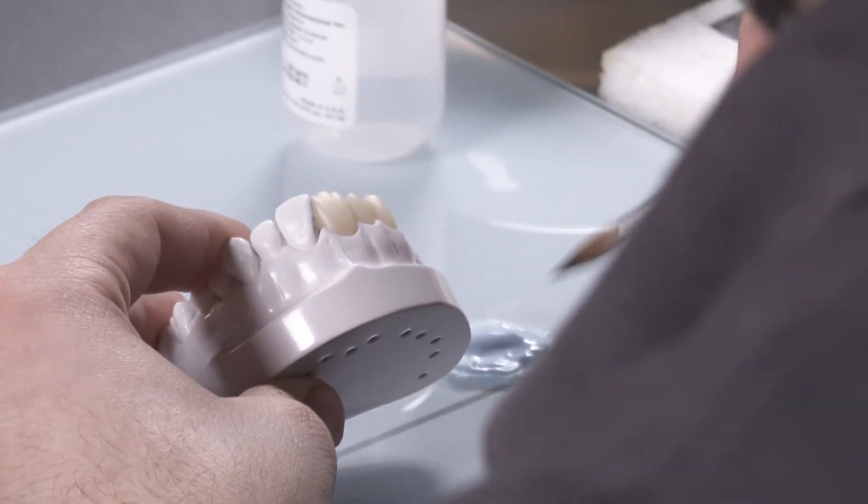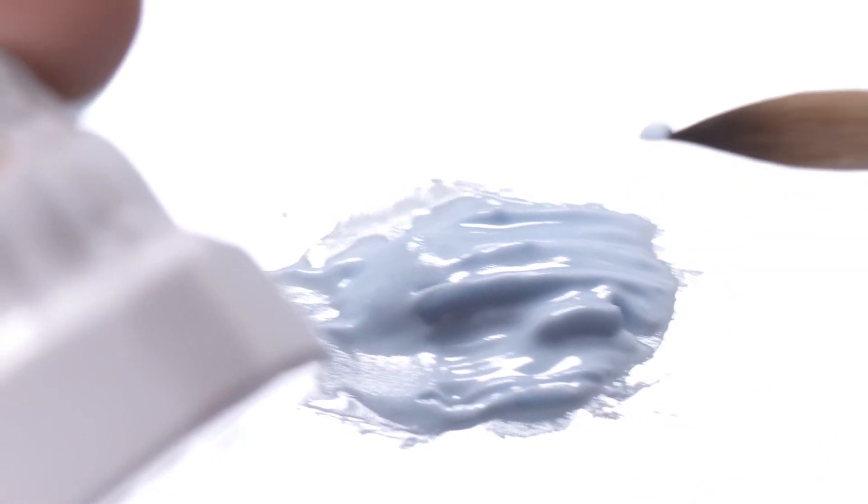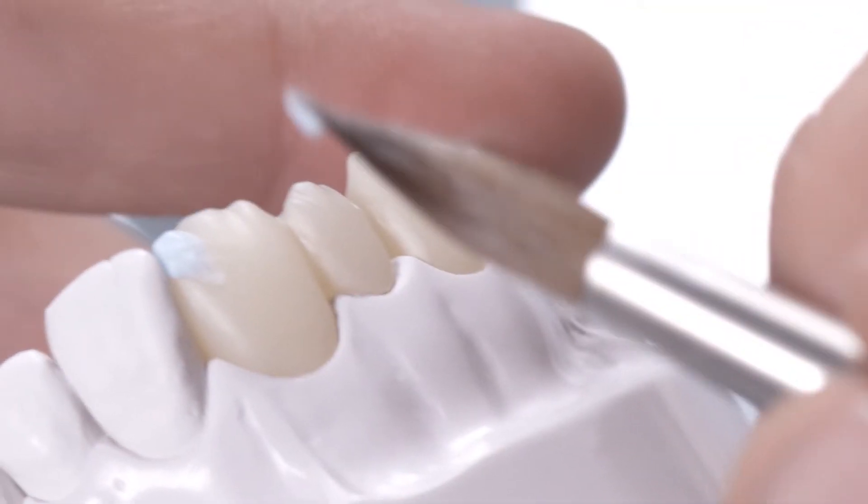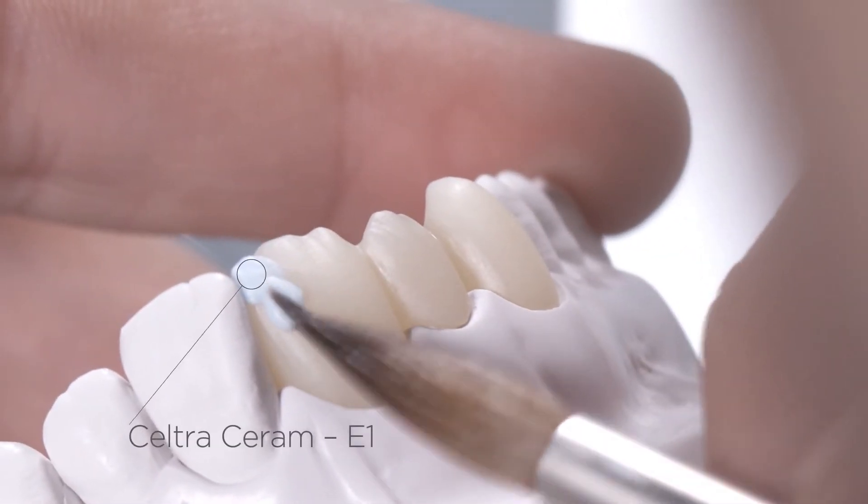Build up the labial and palatal aspects of the enamel layer with Enamel E1 and shape them to obtain their final contours.